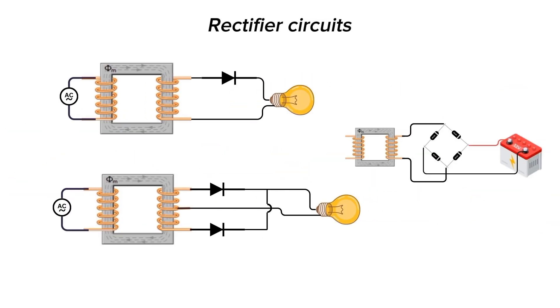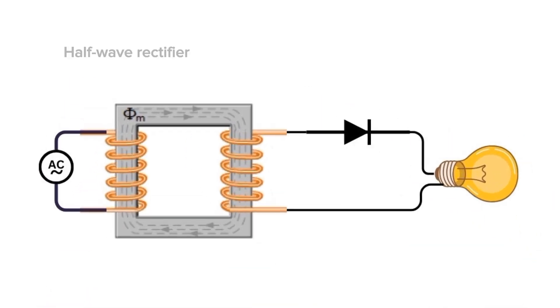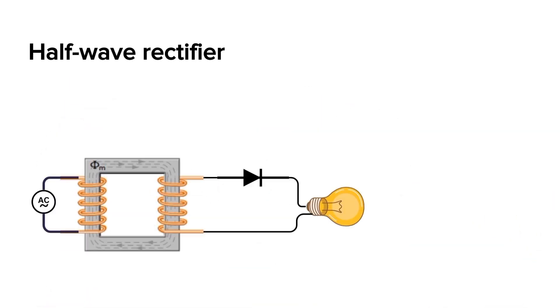Now, let's discuss the rectifier circuits. First, the half-wave rectifier circuit. In this circuit, we first use a step-down transformer to decrease the voltage from 120 or 230 volts AC to 12 volts AC. Then, we convert this lower voltage to DC using a diode.